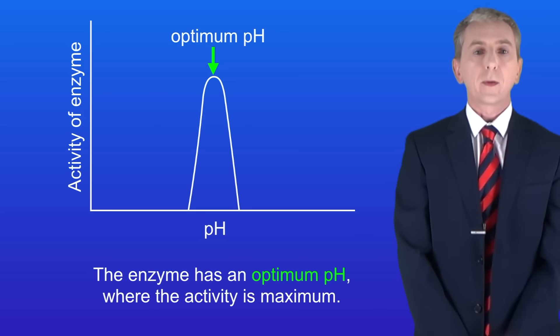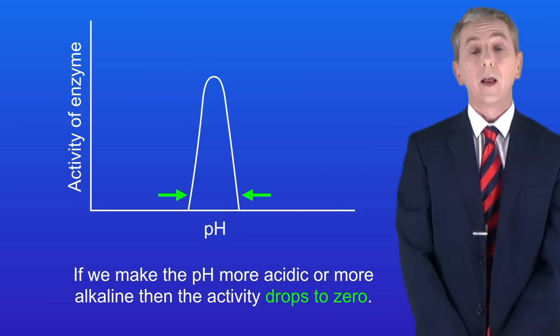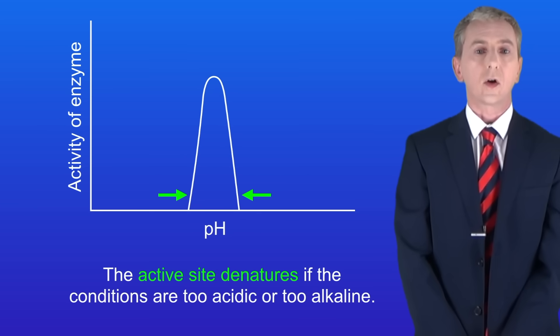The enzyme has an optimum pH, where the activity is maximum. If we make the pH more acidic or more alkaline then the activity drops to zero. That's because the active site denatures if the conditions are too acidic or too alkaline.